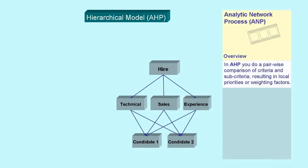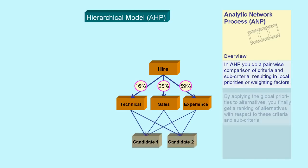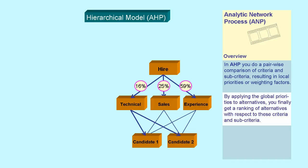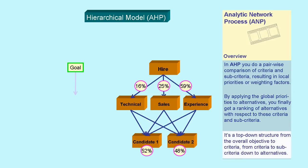In the Analytic Hierarchy Process (AHP), we do a pairwise comparison of criteria and sub-criteria, resulting in local priorities or weighting factors. By applying the priorities to alternatives, we finally get a ranking of alternatives with respect to these criteria and sub-criteria. It is a top-down structure from the overall goal to criteria and sub-criteria down to the alternatives.